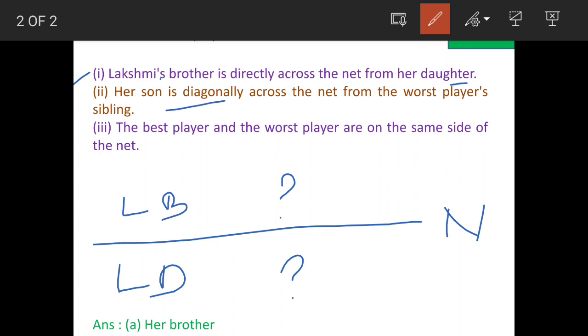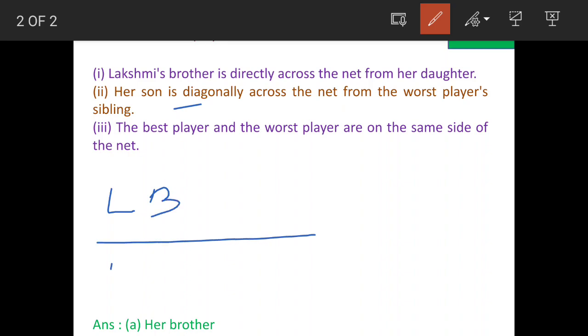Now condition 2 is slightly complicated. Her son is playing diagonally across the net from worst player's sibling. So this is Lakshmi's brother initially and this is Lakshmi's daughter. He is sibling to Lakshmi and daughter is sibling to Lakshmi's son. So if Lakshmi is the worst player, then Lakshmi's son is located here and Lakshmi is located here. So this is one case.